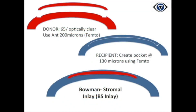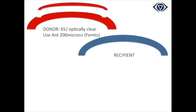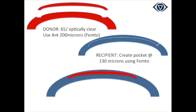We describe a simpler technique for performing Bowman layer transplant. The technique involves creating an anterior 150 to 200 micron donor cornea graft using femtosecond laser and transplanting it into an intra-stromal pocket of the recipient cornea. As this graft contains Bowman layer along with anterior stroma and is placed intra-stromally, it was called Bowman Stromal Inlay.